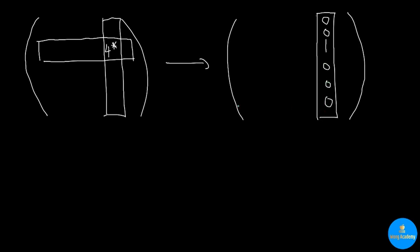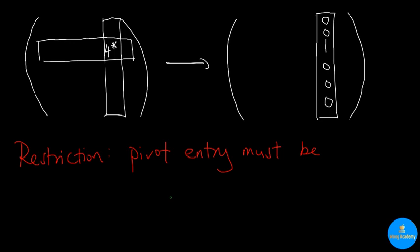About the choice of a pivot entry: basically, any entry in the matrix can be chosen as the pivot entry, except one restriction. The restriction is that the pivot entry must be non-zero. In other words, if this four were a five or negative two, then we can still pivot at it. But if this were a zero, then we cannot.